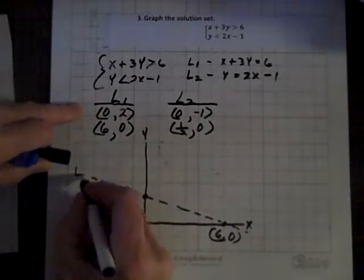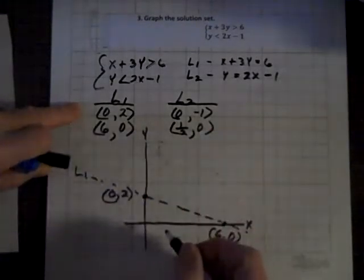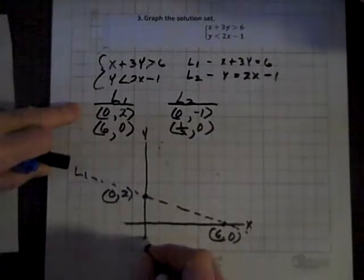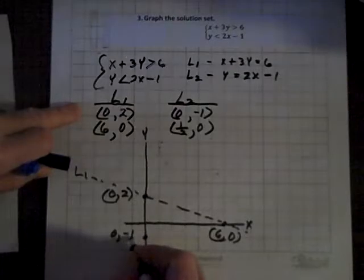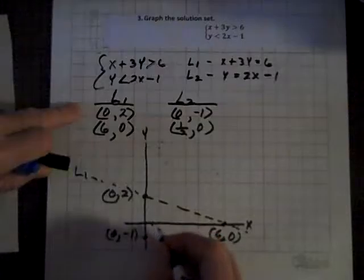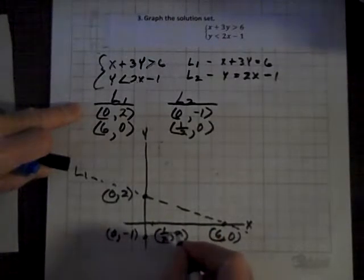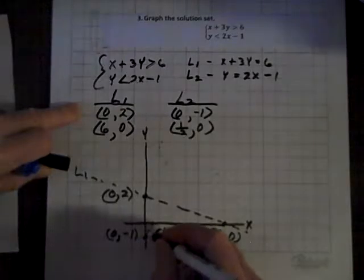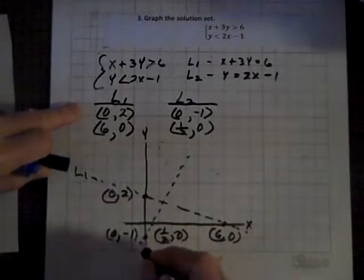Now, and this is our first line. Now, for L sub 2, we've got a Y intercept at 0, negative 1, and an X intercept at 1 half, 0, and so there's our L sub 2.